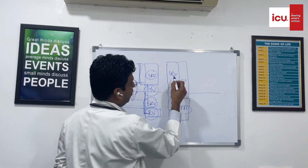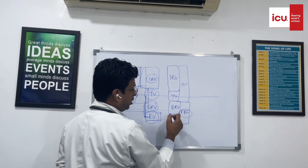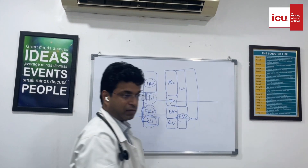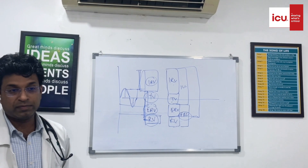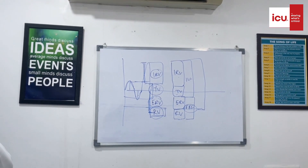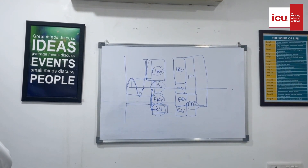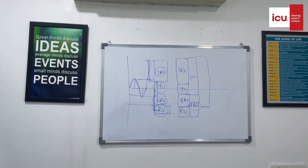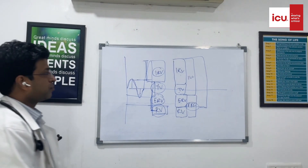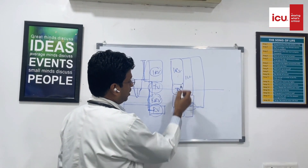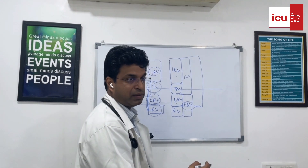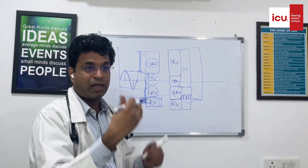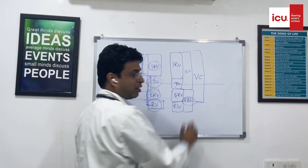Now if I combine inspiratory reserve volume, tidal volume, and expiratory reserve volume — this is the amount of air which is maximum moving inside and outside your lung — and it is rightly called vital capacity.